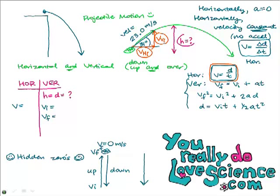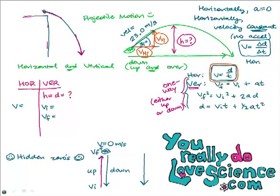When your teacher says calculate the height, what you're really calculating is the distance the football travels vertically on its way up — not on its way up and down, which would be twice the height, but just on the way up. Everything you plug into these equations is one-way information — either up or down, but not both — because the height is just the distance on the way up, or in some cases on the way down.